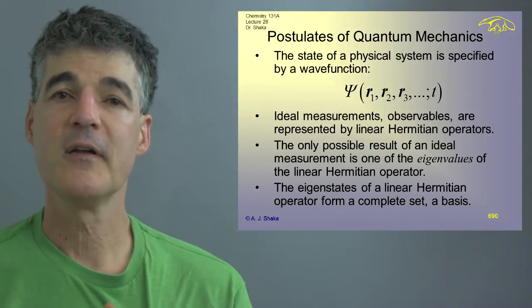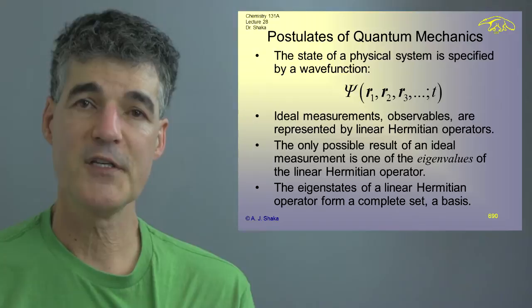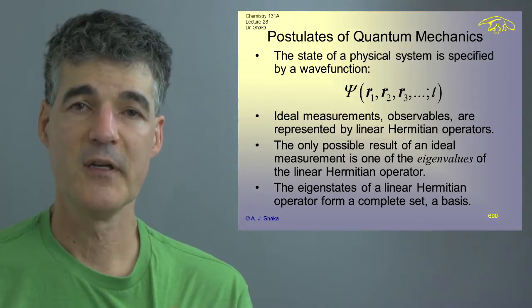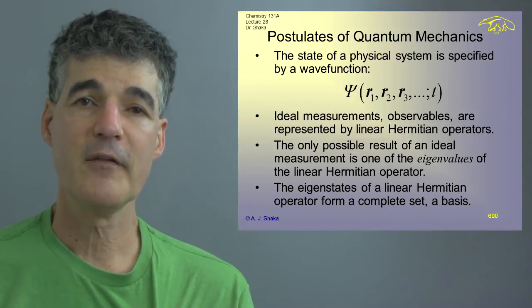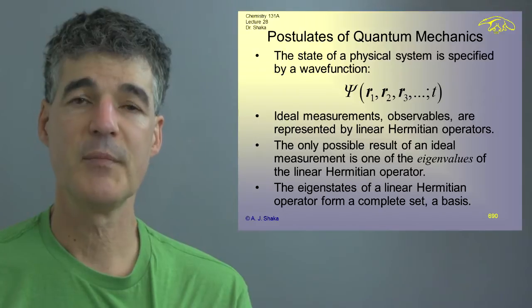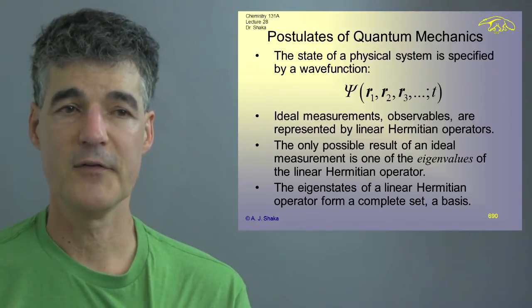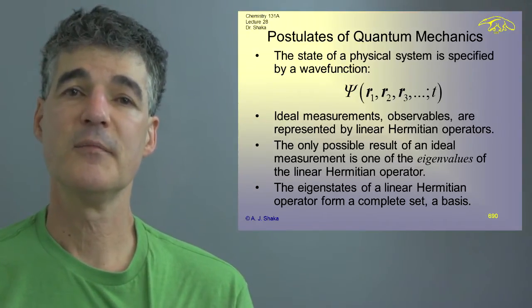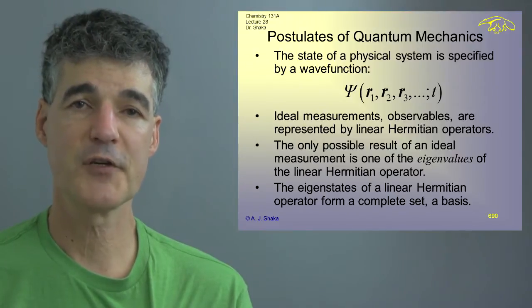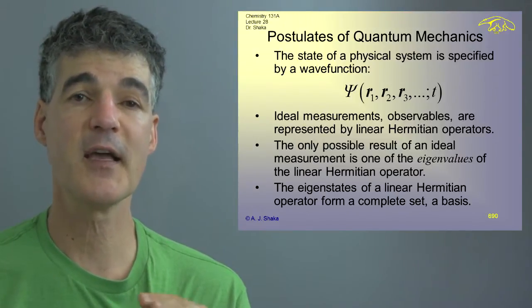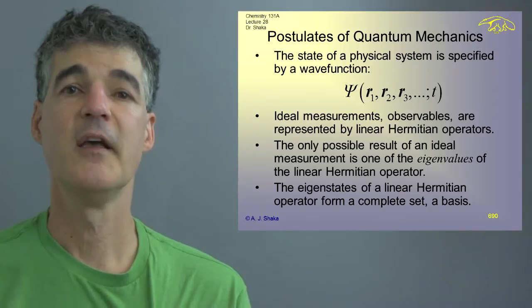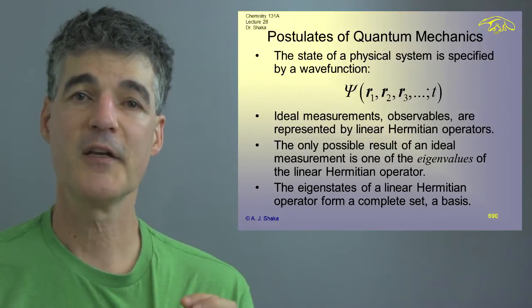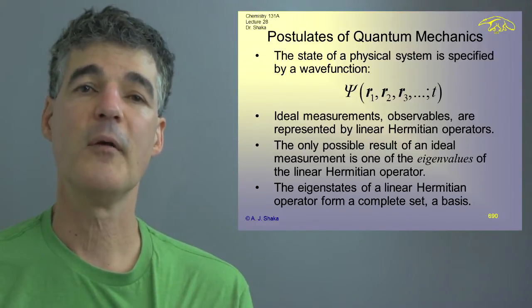When we make a measurement, we represent that with a linear Hermitian operator. And the only possible result of an ideal measurement is one of the eigenvalues of the linear Hermitian operator which, because it's Hermitian, has real eigenvalues. And once we make a measurement, then the system has been altered, usually, by that measurement unless we're measuring the exact same thing again, in which case, we know the result we're going to get in that peculiar case because we've done an experiment that rules out all the other probabilities.